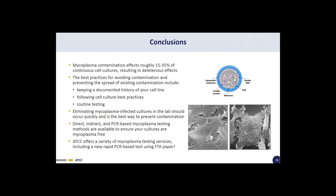In conclusion, mycoplasma contamination affects roughly 15 to 35 percent of continuous cultures and can result in deleterious effects. Best practices for avoiding contamination include keeping a documented history of your cell line, following cell culture best practices, and always performing routine testing using the methods discussed today. Eliminating mycoplasma-infected cultures quickly is always the best way to prevent further contamination. Direct, indirect, and PCR-based mycoplasma testing methods are available, and ATCC offers a variety of mycoplasma testing services, including a new rapid PCR-based test using FTA paper.